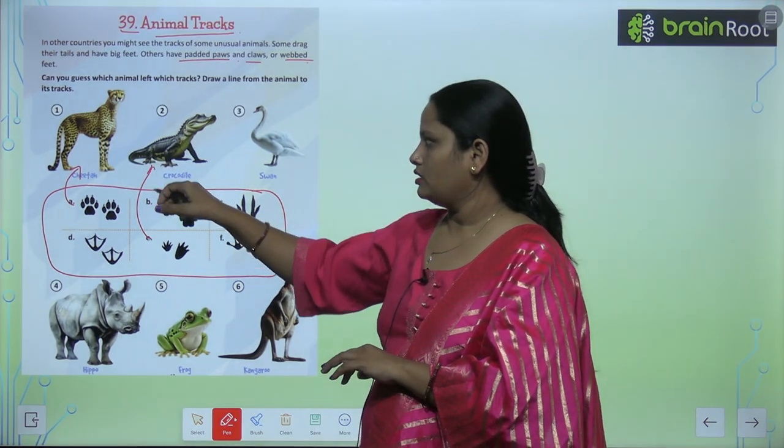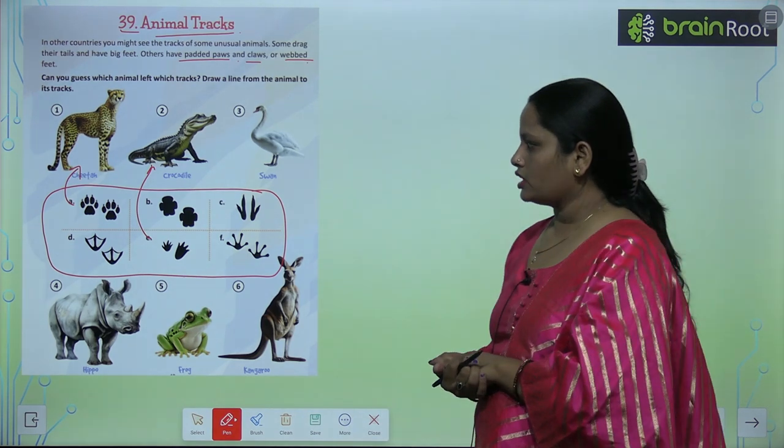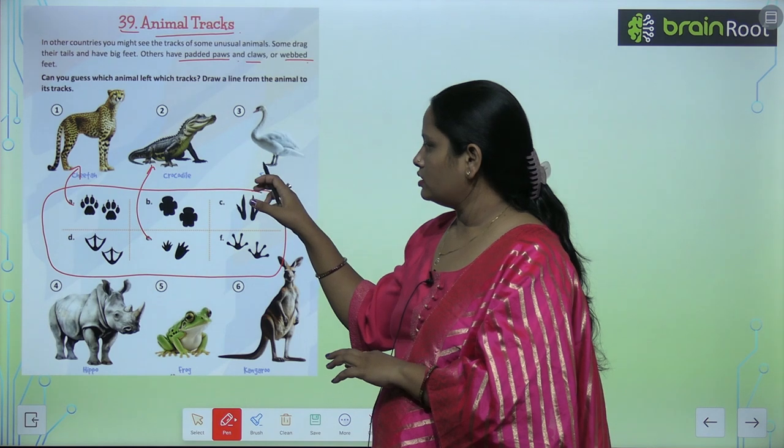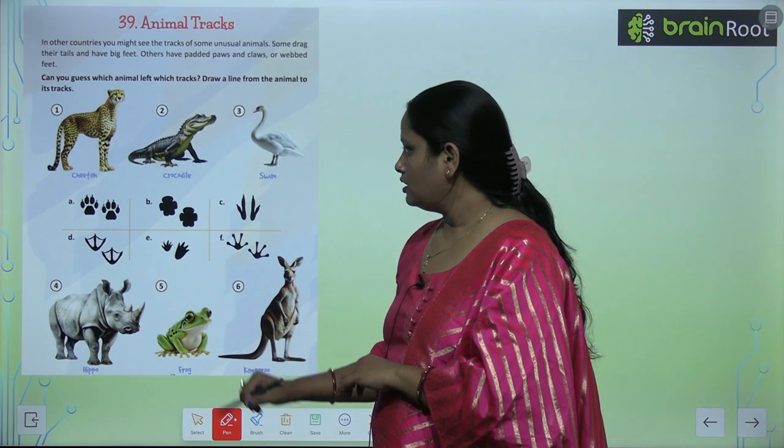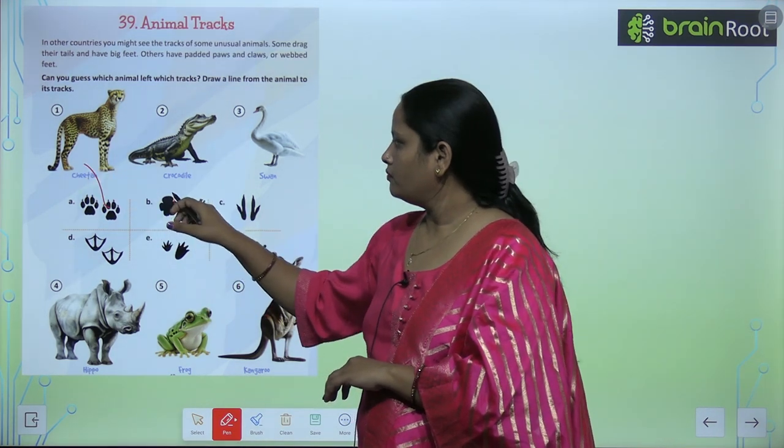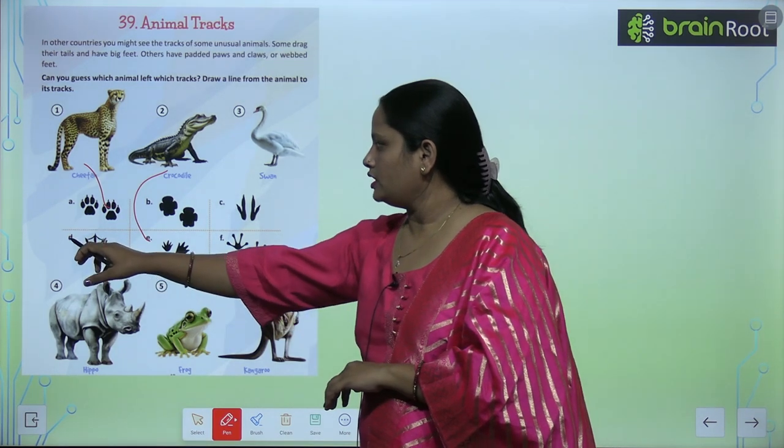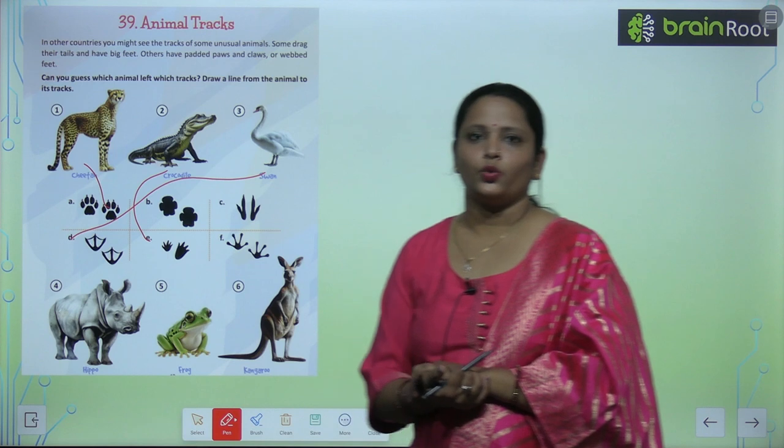Next is swan. Now swan's feet are webbed. So here D is of swan. It has webbed feet.